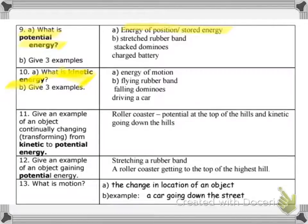Alright, what is kinetic energy? Oops, I hope that my highlighter here isn't blocking it out. I guess you can just erase that if you need to. Kinetic energy, it's the energy of motion. Energy of motion, like a flying rubber band, or the dominoes falling, or driving a car. Alright, number eleven, give an example of an object continually changing or transforming from kinetic to potential. And we usually talk about a roller coaster, right? It's potential energy at the top of the hill, and then it's kinetic as it's actually moving, going down the hills.